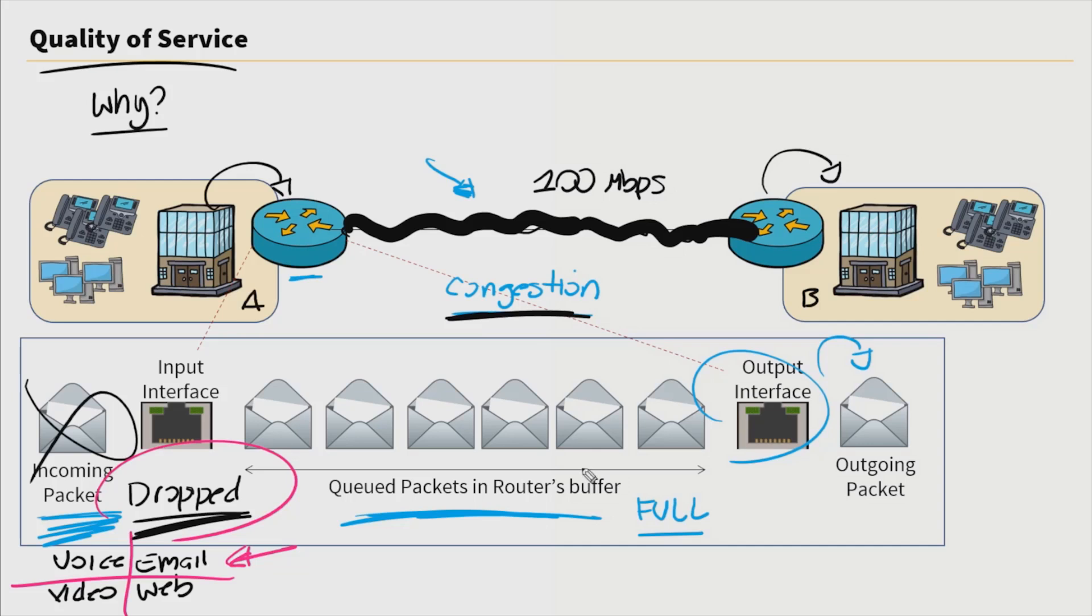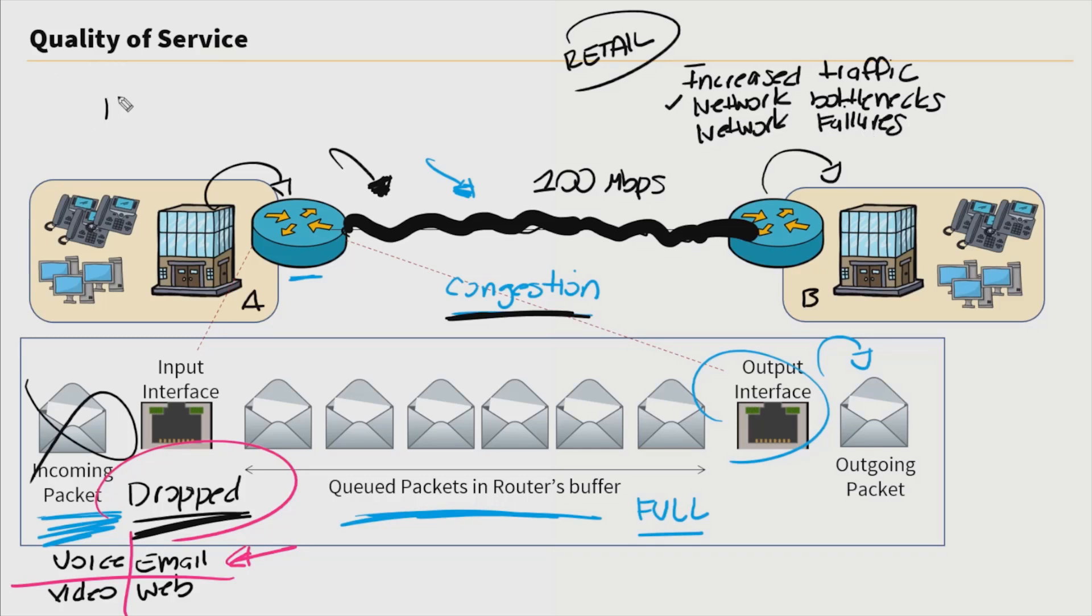So what are some factors that would cause congestion? Maybe you have increased traffic on the network. Maybe we have a retail environment, and it's currently the holidays, so people are going crazy for their holiday shopping. So because of that, you may experience higher than usual traffic on your networks. Maybe you have network bottlenecks. You may have network equipment that may not be able to handle the amount of traffic. Maybe we don't have the most optimal routing in our network. Or maybe somewhere across our network, we have some links across our topology that have lower bandwidth connections. Maybe we have network failures.